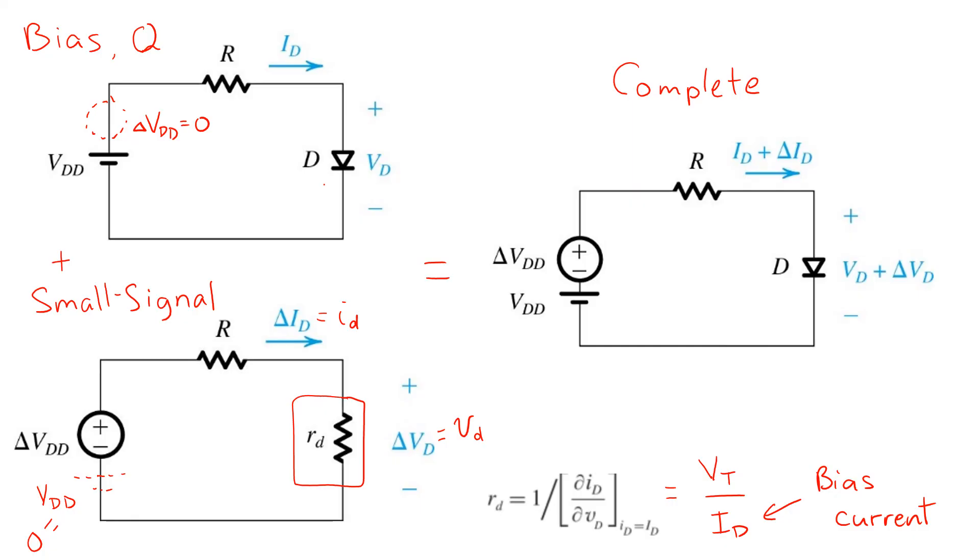So again, in summary, we solve for such circuits by first performing an analysis to find the bias point Q, then linearizing the circuit around that bias point, replacing the linear components with a linear circuit model, and then performing a linear circuit analysis of the resulting small signal equivalent schematic. Finally, we can superimpose the small signal results on top of the bias point Q to get the complete solution again.